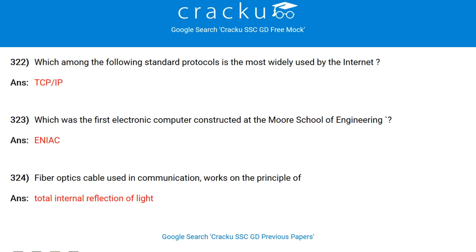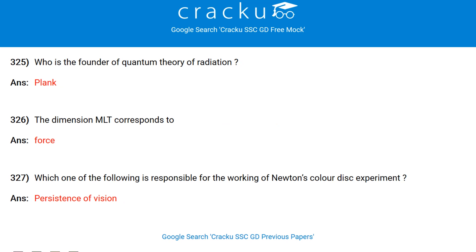When a metal is heated in a flame, the electrons absorb energy and jump to a higher energy state. On coming back to the lower energy state, they emit light, which we can observe in emission spectra. Rutherford's scattering experiment proved the presence of the nucleus in atoms. What is the standard protocol widely used by the internet? TCP/IP. Which was the first electronic computer constructed at the Moore School of Engineering? ENIAC. Fibre optic cable used in communication works on the principle of total internal reflection of light.